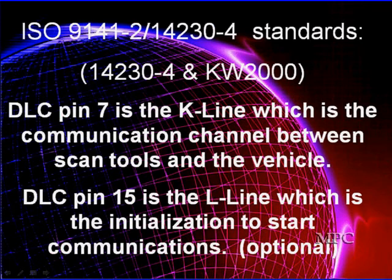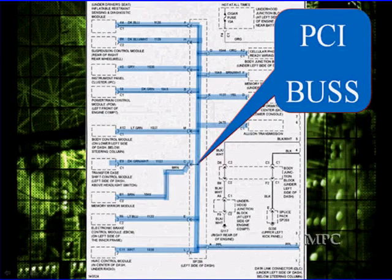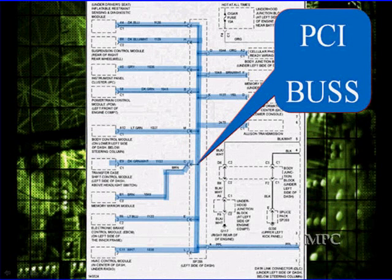We're going to get down into the nitty-gritty of all the different specifications. This is the ISO 9141 — it's used in import vehicles from Europe and Asia. Two pins are predominantly used, and we're going to go into all the details. We're going to talk about taking a diagram and understanding what diagrams are like. We've highlighted a diagram showing you where all the PCI bus goes. On this particular vehicle, which happens to be a Chrysler, you'll be able to communicate with the scan tool, but the security system and some other things can't communicate if this bus is down.